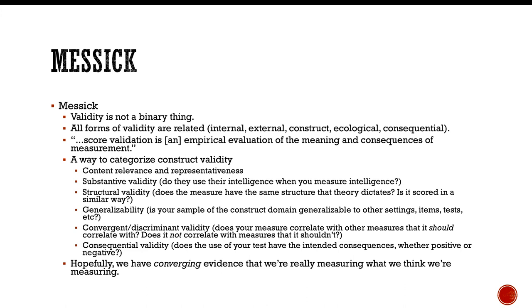So that gets us to Messick and Messick is really, Messick was, I don't believe he's alive anymore, but Messick was a deep, deep thinker who really revolutionized the way we think about validity. And so here are some of his arguments. He said, validity is not a binary thing. You don't have it. It's not one of those things where you have it or you don't. So it's on a scale. You have more or less of it and all forms of validity are related. So internal, external construct, ecological, consequential, all these things are related.